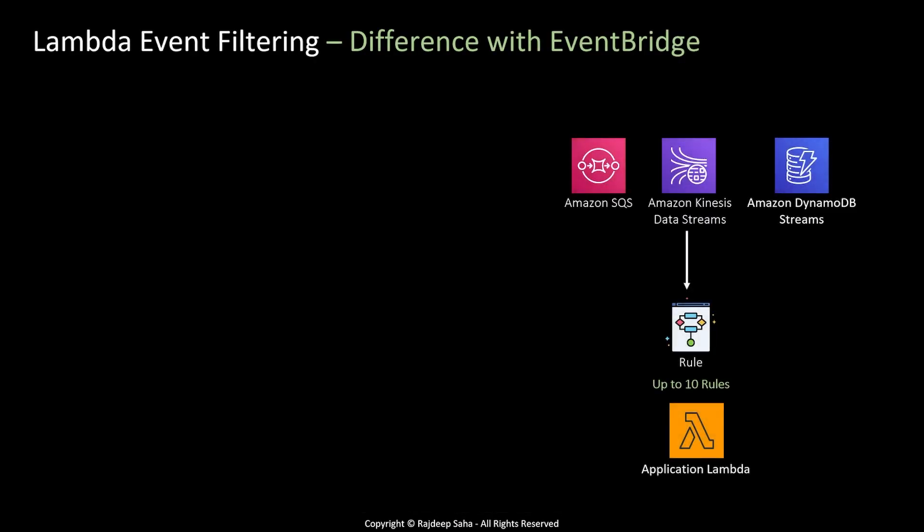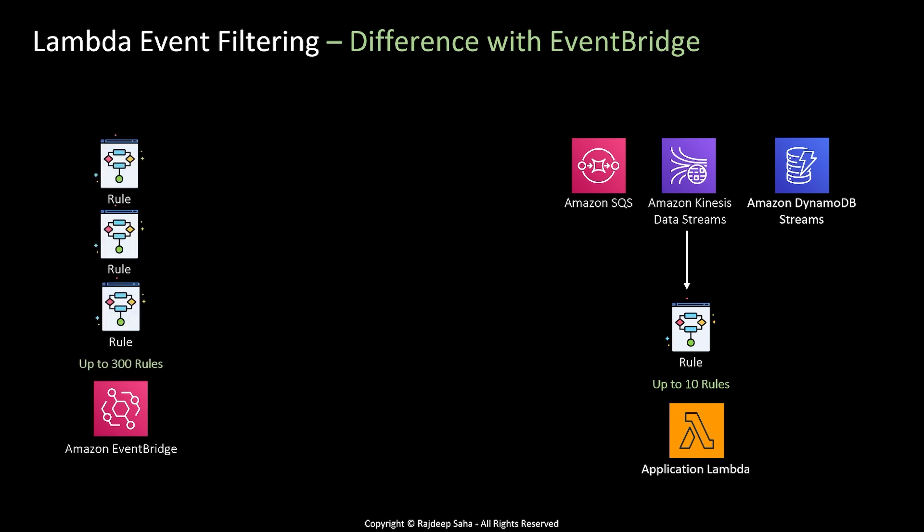So what is the difference between this feature and EventBridge rules? Lambda event filtering rules are on the consumer side — the Lambda service checks those rules, discards messages that don't fit, and sends only the appropriate messages to the Lambda. If messages do not satisfy the rule, they will be discarded.